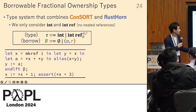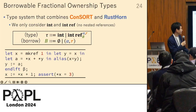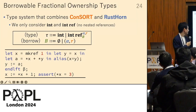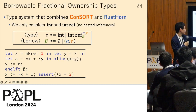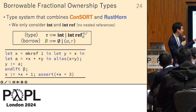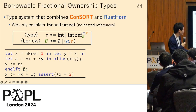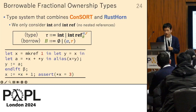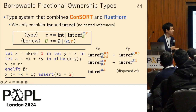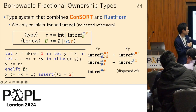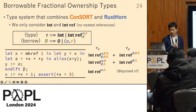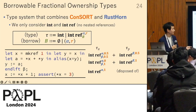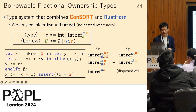For example, consider a program where references x and y are initialized as aliasing references. We use both of them to initialize variable a, then update y, then update x, and verify the assertion. Our type system can type this program where y borrows ownership of x depending on the program point. This may be hard to read on the slide, so we show the typing as a diagram.